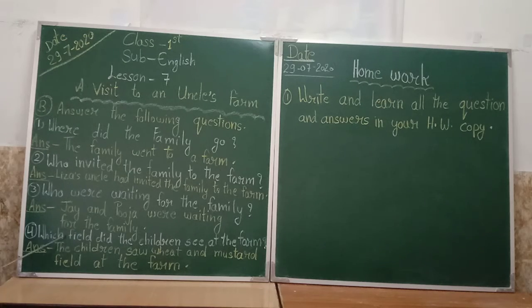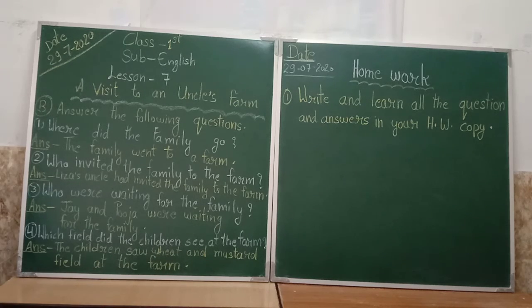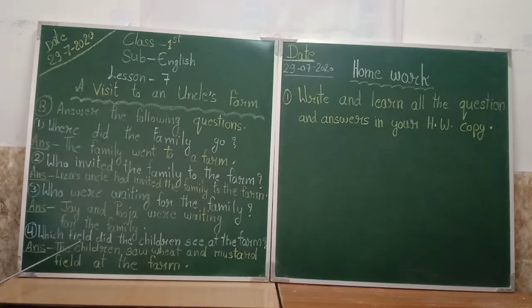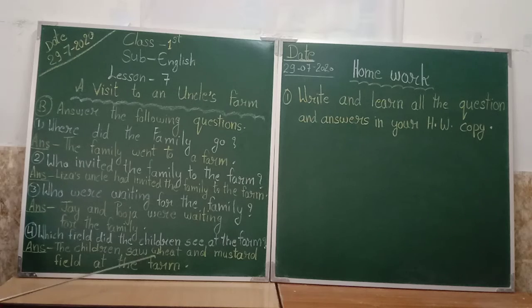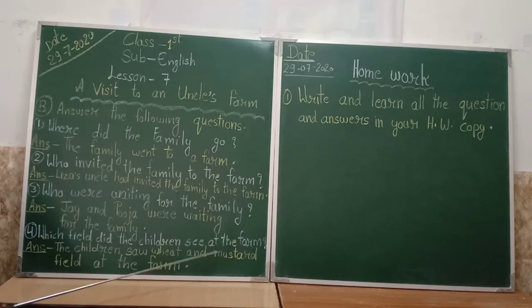Question number four — which field did the children see at the farm? Yahan pe question hai field mein bachchon ne kaun kaun si fasal dekhi? To uska answer hai: the children saw wheat and mustard fields at the farm. Farm mein bachchon ne wheat and mustard — yaani gehoon aur sarson ki fasal — unhe dekha.